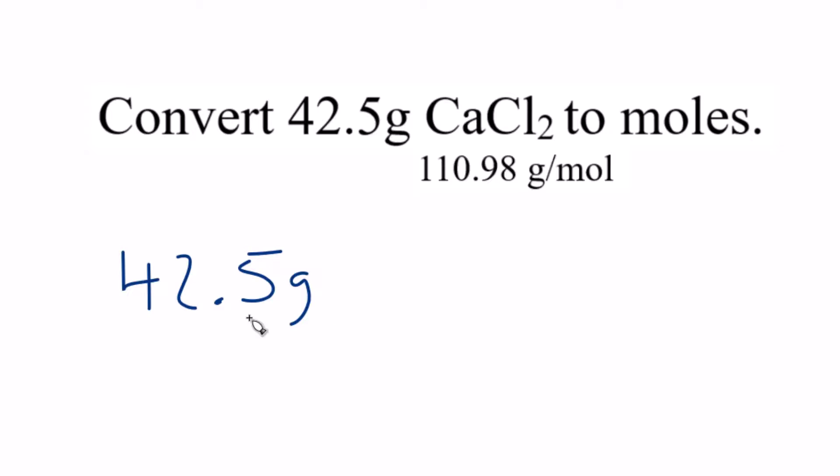It's really just the same thing. We have our grams. In this case, we multiply by a conversion factor. With grams on top, we need grams on the bottom so they'll cancel out. We know there are 110.98 grams in one mole of calcium chloride.